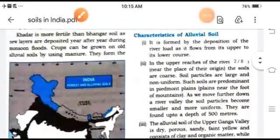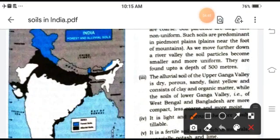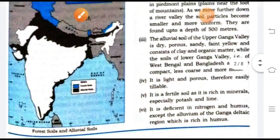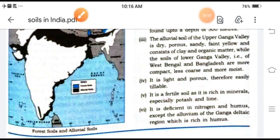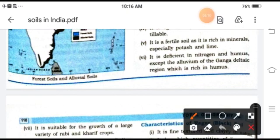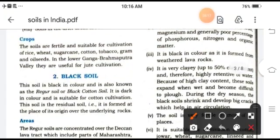Some characteristics of alluvial soils: they are formed by river deposition; these soils are coarse; in the upper Ganga valley they are porous, sandy, and faint yellow in color. Alluvial soil is light and porous, fertile, and rich in minerals, potassium, and lime, but deficient in nitrogen. Important crops grown in alluvial soils are jute, rice, and wheat.